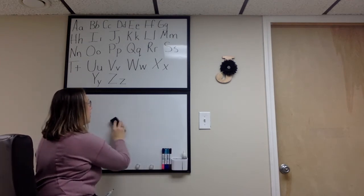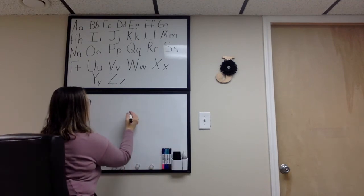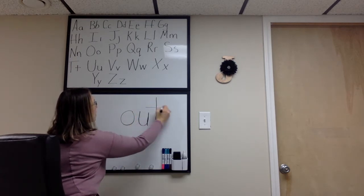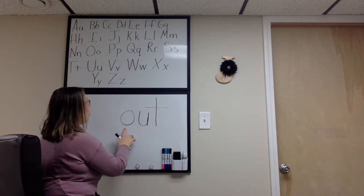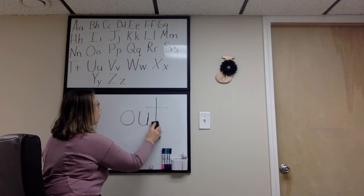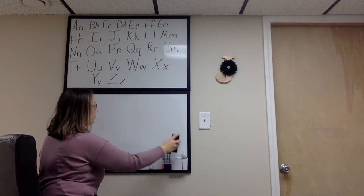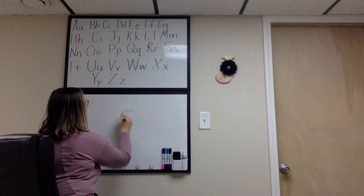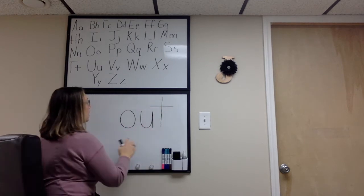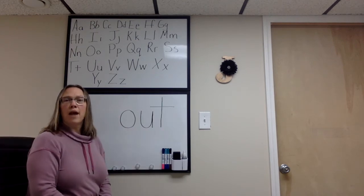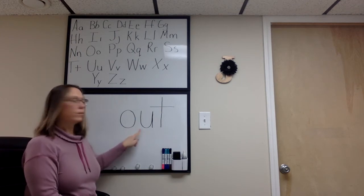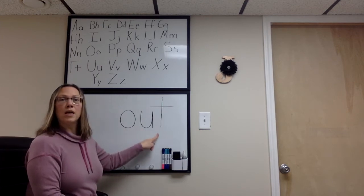Let's practice the next tricky word. O-U-T spells out. O-U-T spells out. Now you try practicing with Mrs. Johnston. O-U-T, out. Now you say our tricky word. Did you remember to say out? O-U-T spells out.